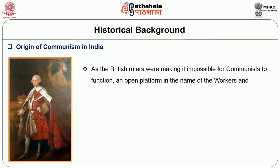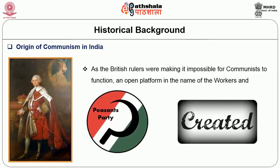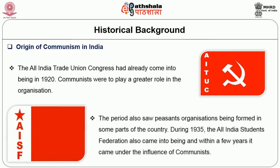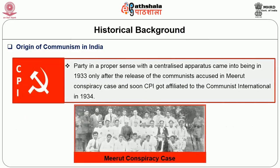As the British rulers made it impossible for communists to function openly, a platform in the name of the Workers and Peasants Party was created. The All India Trade Union Congress had already come into being in 1920, and communists were to play a greater role in that organization. The period also saw peasant organizations being formed in some parts of the country. Later, during 1935, the All India Student Federation also came into being and within a few years came under the influence of communists. The CPI as a party with a centralized apparatus came into being in 1933, after the release of the communists accused in the Meerut Conspiracy case, and soon CPI got affiliated to the Communist International in 1934.